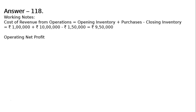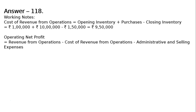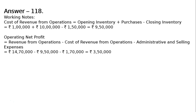Next step is Operating Net Profit. That is Revenue from Operations minus Cost of Revenue from Operations — this gives us Gross Profit — minus Administrative and Selling Expenses, which gives us Operating Net Profit. That is equal to Rs. 14 lakh 70,000 minus Rs. 9 lakh 50,000 minus Administrative and Selling Expenses Rs. 1 lakh 70,000, which equals Rs. 3 lakh 50,000.